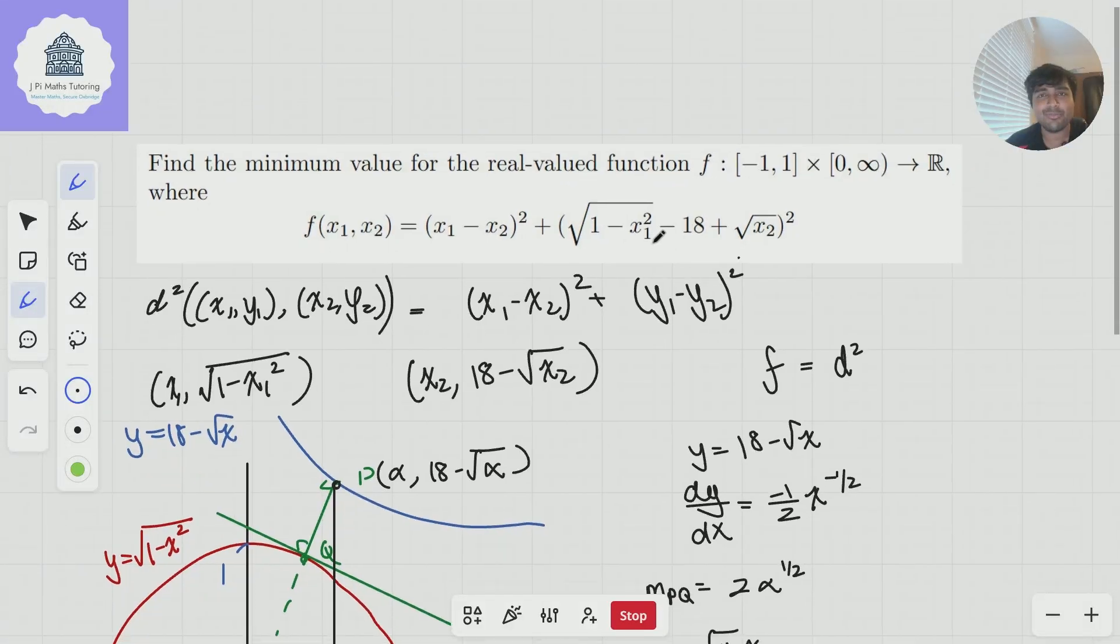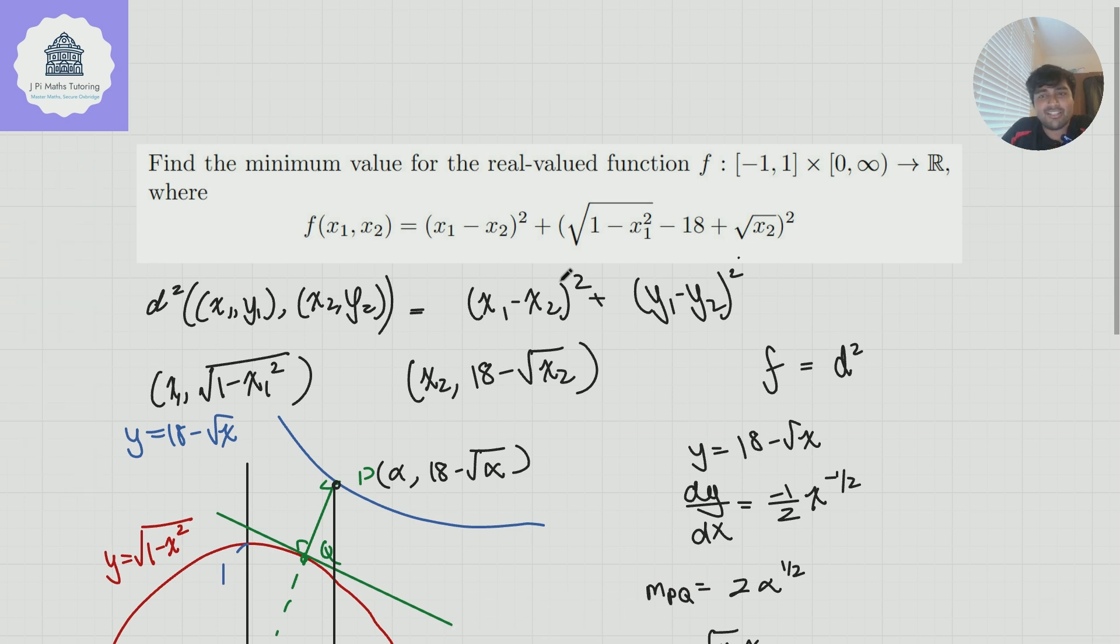A really nice problem where one of the big morals of the story is: let's not do what A-level teaches us to do and just go crazy and expand and expand. It's to go, okay, cool. There's something going on here. What is this trick that's going on? I really like this problem. Hopefully you did too.